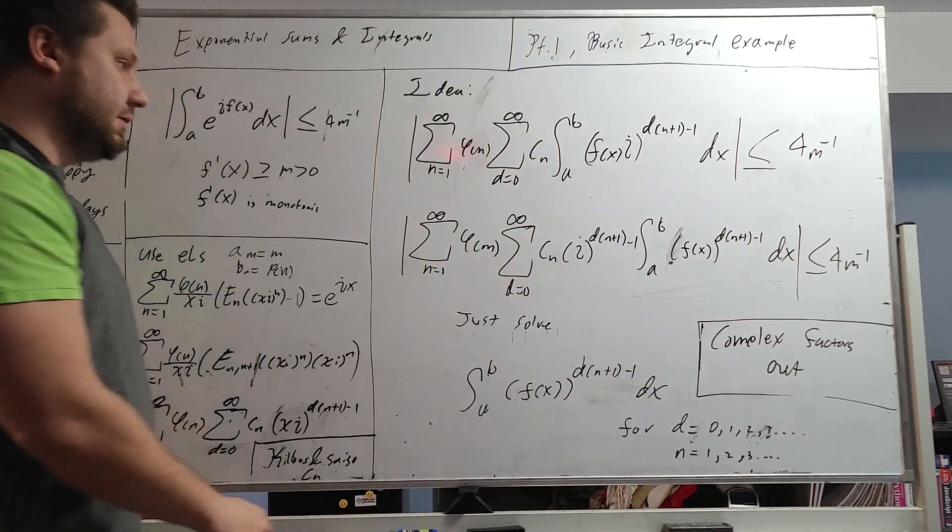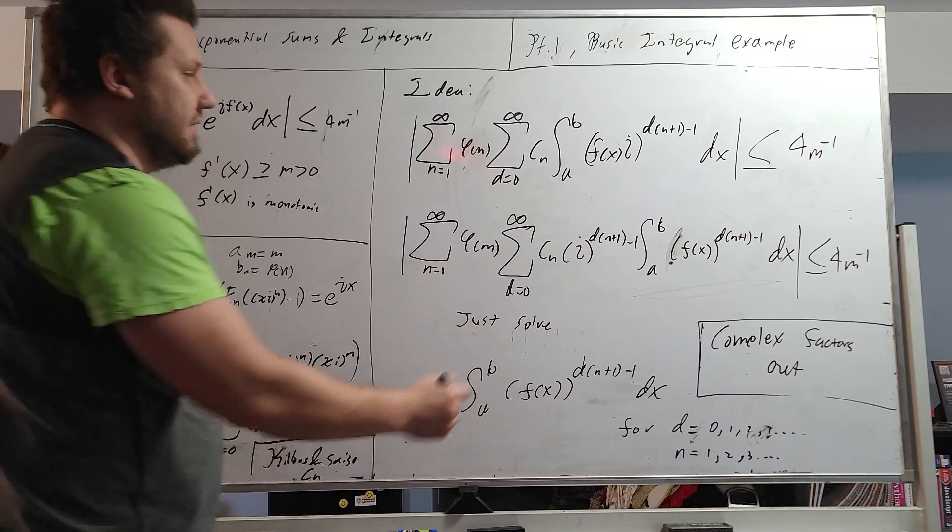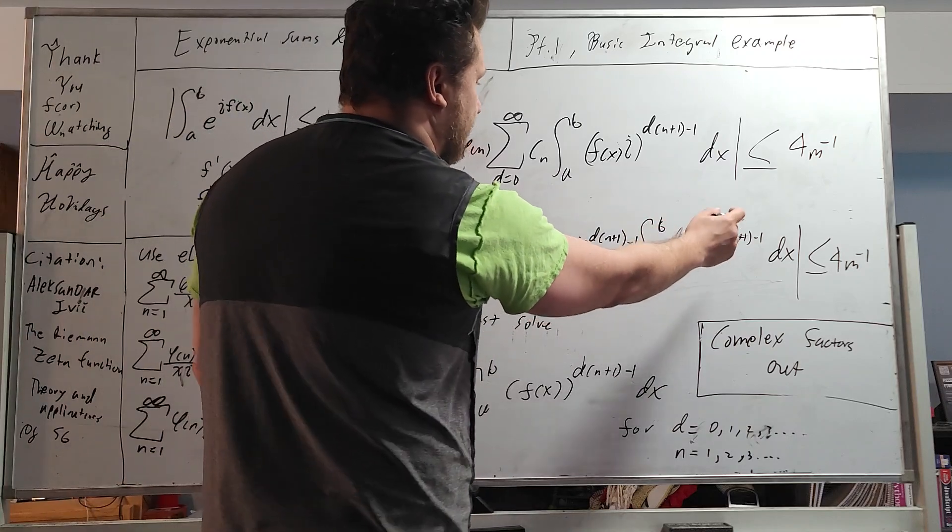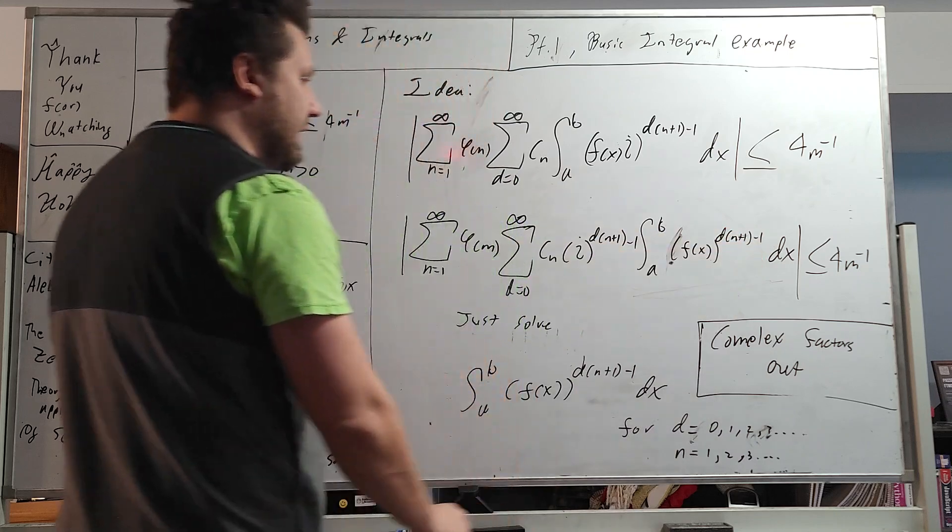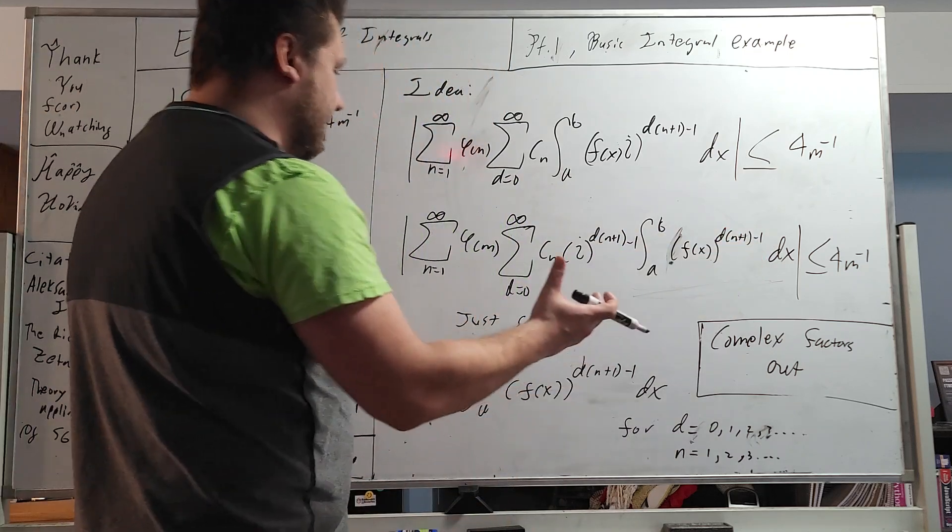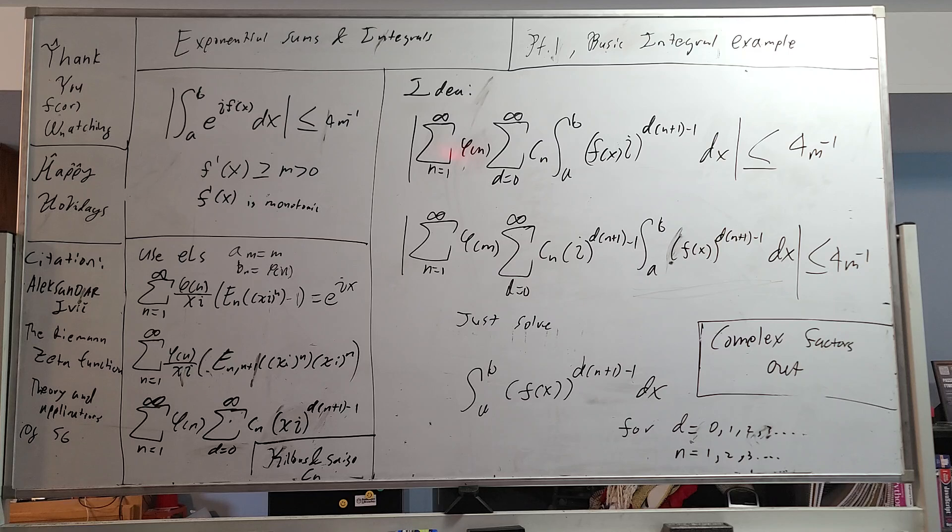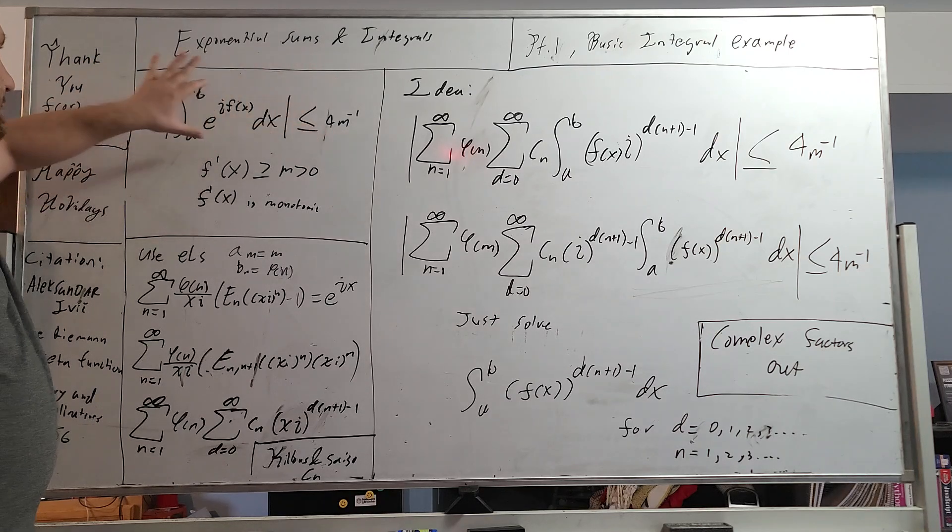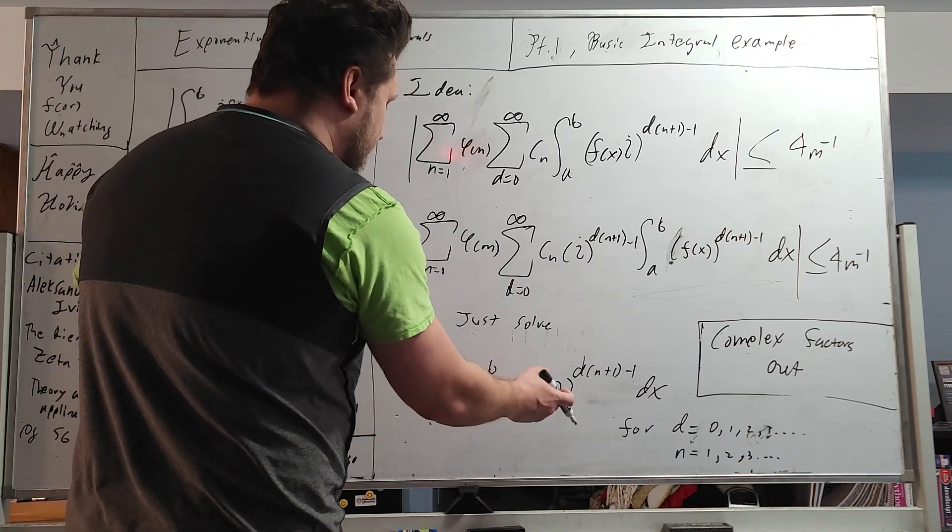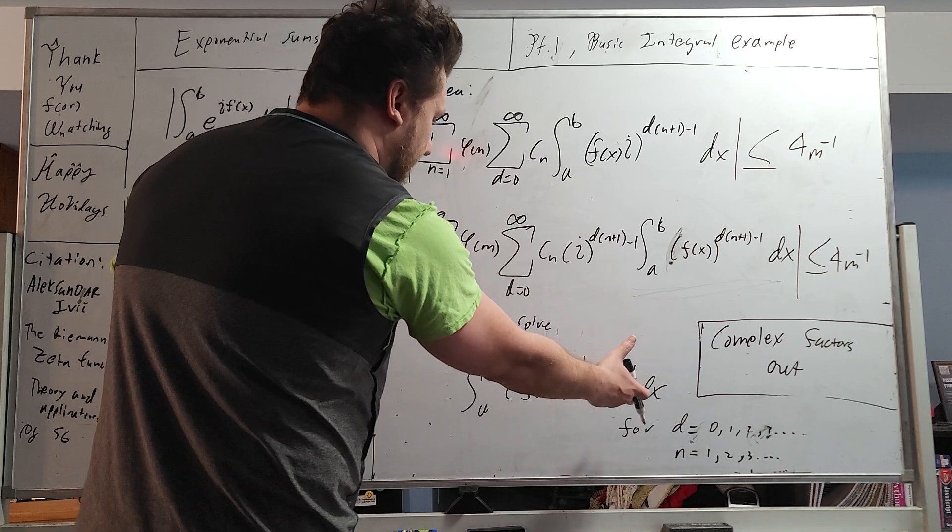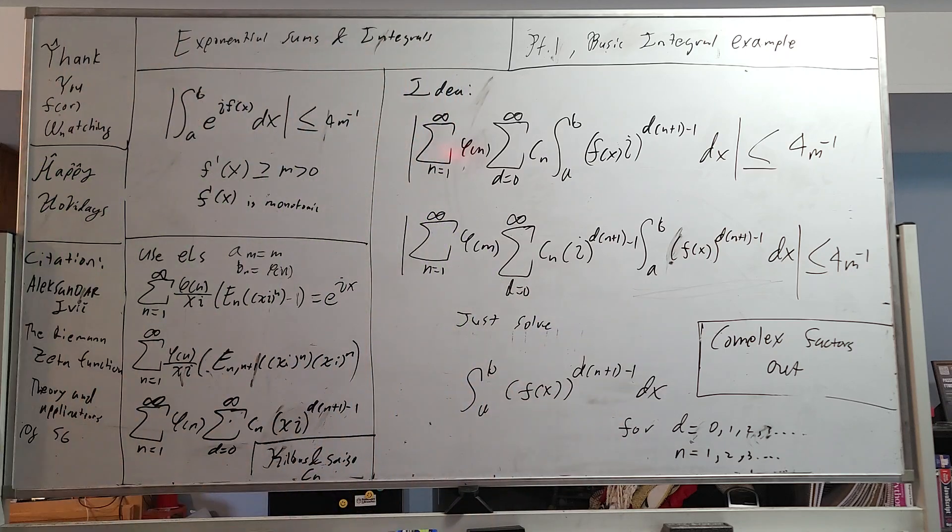And all we're left with is this integral right here. If my markers run out, that's totally okay. We have integral a to b, f of x, raised to the d times n plus one, minus one. And all we really have to do in order to look at this type of problem, or this type of setup right here, is just solve this integral. Integral a to b, f of x to the power dx.